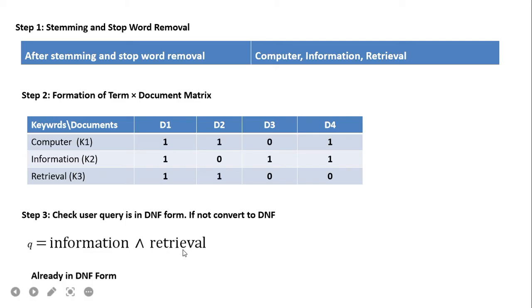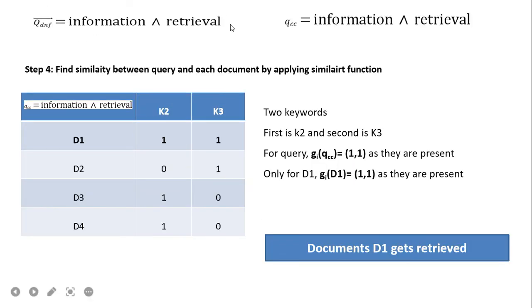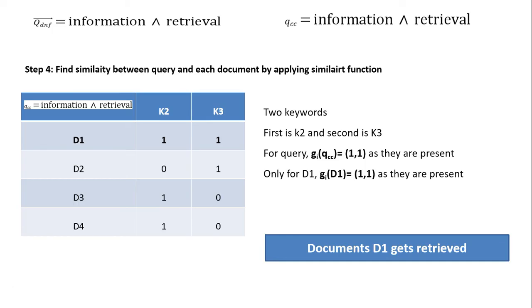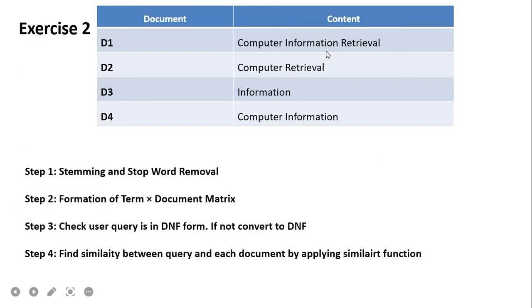The query given is 'information AND retrieval.' This query is already in DNF form, so it is represented as q_dnf, and since it has only one part, it is qcc = information AND retrieval. Information and retrieval correspond to k2 and k3. Since the operator is AND, both must be present. Checking all four documents, only d1 matches — all other documents do not. Therefore only document d1 is retrieved, which we can verify: information and retrieval appear together only in d1.